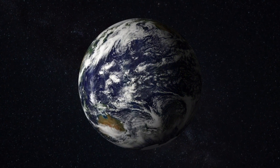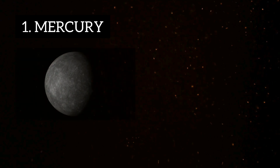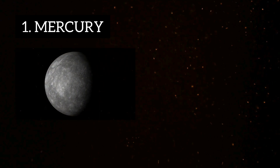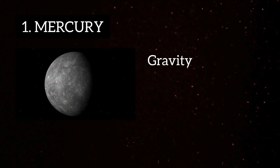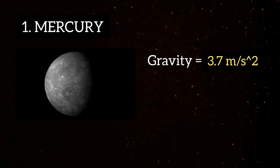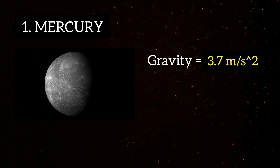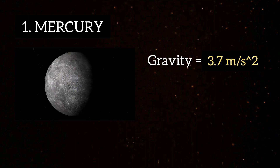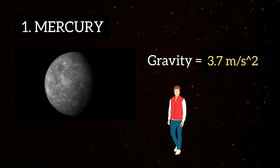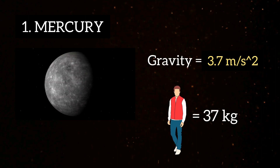First, Mercury, the first planet of our solar system, has a gravity of around 3.7 meters per second square, which is 0.37 times that of Earth. So, a person of 100 kg will weigh around 37 kg on Mercury.